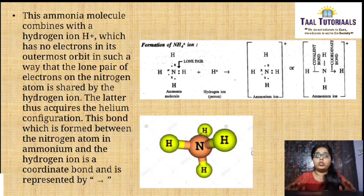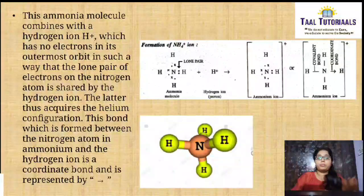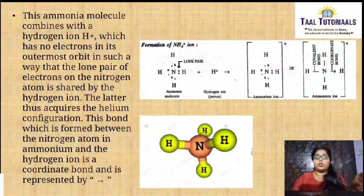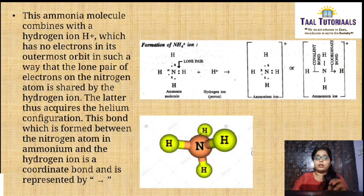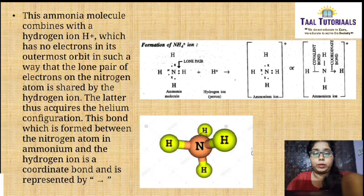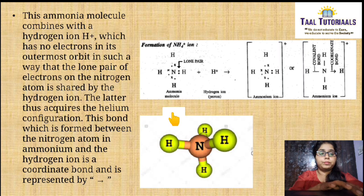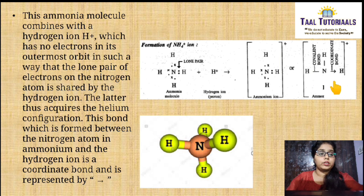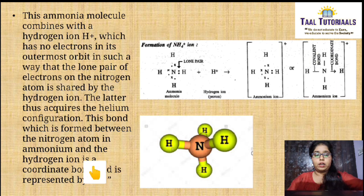This ammonia molecule then combines with a hydrogen ion which has no electron in its outermost orbit, such that the lone pair of electrons on the nitrogen atom is shared with the hydrogen ion. The hydrogen ion thus acquires the helium configuration and attains stable electronic configuration. This bond formed between the nitrogen atom and the hydrogen ion is known as coordinate bond. In the picture, covalent bonds are represented by a single line and the coordinate bond is represented by an arrow symbol. This is how ammonium ion is formed.